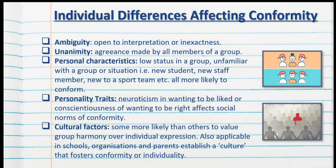We must also consider individual differences affecting conformity. There are lots of different ways in which conformity can be interpreted, or made more or less likely, based on the fact that no two people are the same. Ambiguity is one of these factors — if something is open to interpretation or inexact, that can drastically affect conformity. Being unanimous, meaning agreement by all members of a group, makes the pressure to conform far more likely.